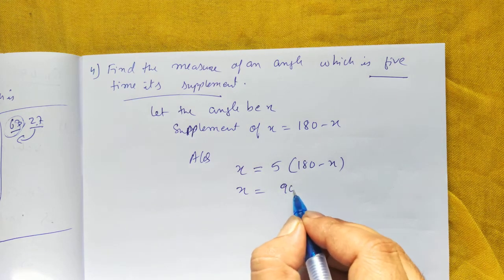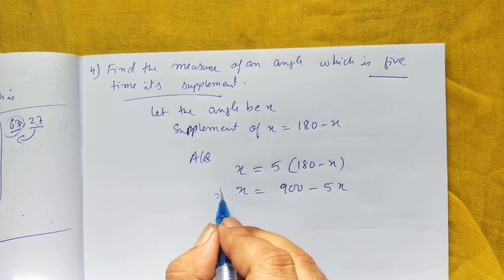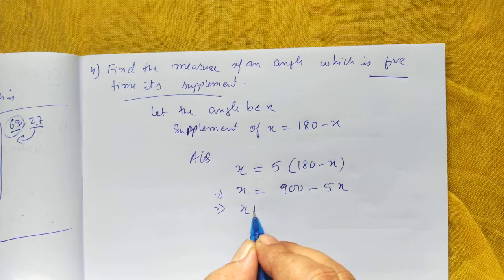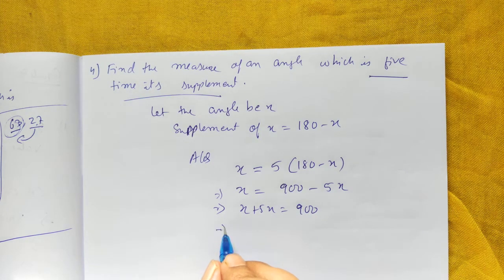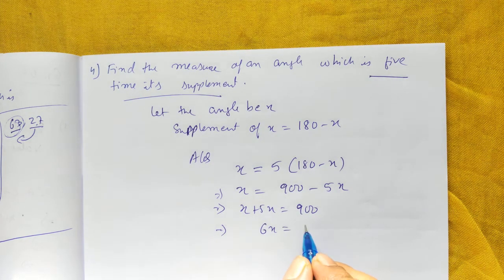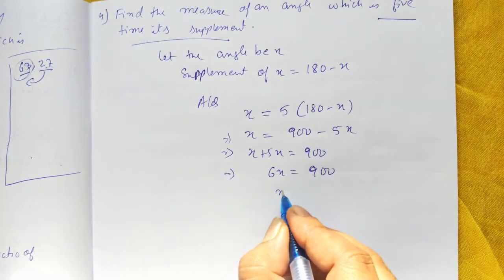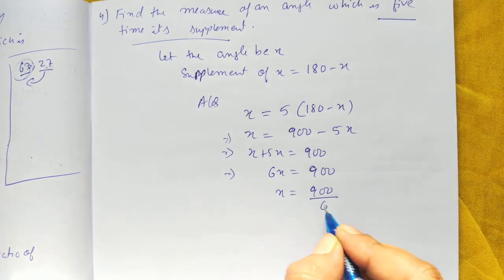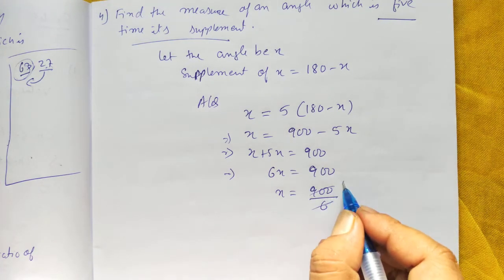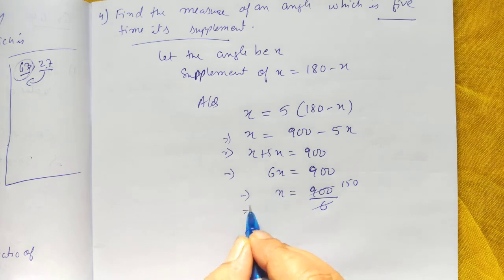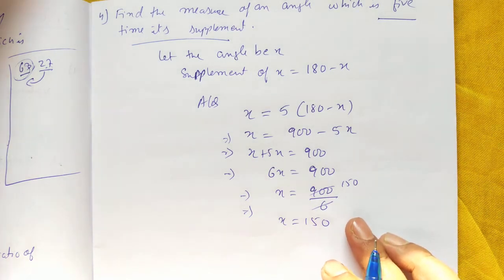X equals 5 times 180 minus 5X. This will be 900 minus 5X. So X plus 5X equal to 900. 6X equal to 900, clear? So what is X? 900 by 6, 150. So X is 150. How will you know this answer is correct or not?